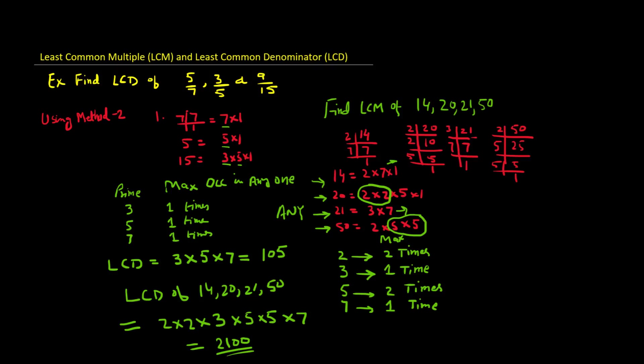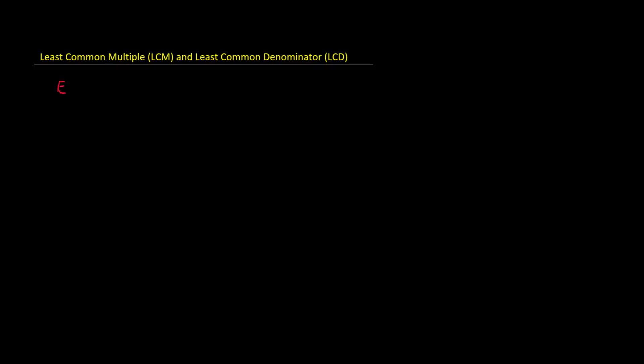Method 3 is basically a new form of Method 2 for finding the LCM, which we are going to learn next. Let us do the same example — 14, 20, 21, and 50 — using Method 3, so it will be easy to see the advantage of this method.